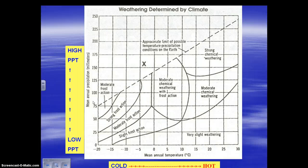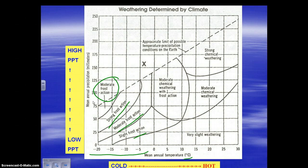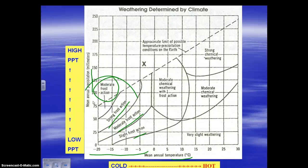Let's look at frost action on this chart — it's in the bottom left. Why is frost action in the cold part of the chart? Because you need cold for water to freeze and create frost action — water flowing into cracks, freezing, expanding, breaking rock apart. You also need some precipitation; in a super dry desert environment, there's no water available. So frost action requires both cold and some moisture.